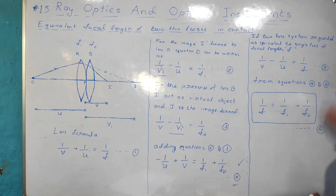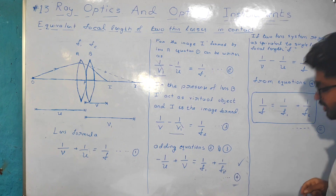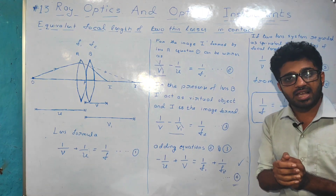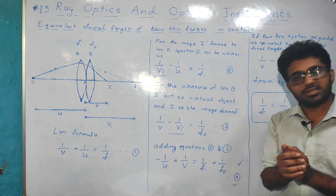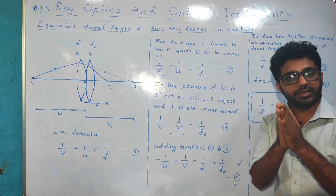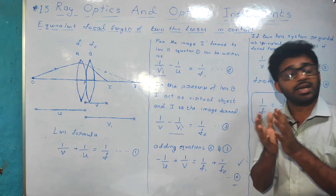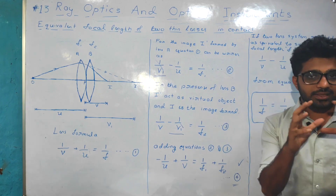If the two-lens system is regarded as equivalent to a single lens of focal length F, then for two thin lenses kept in contact, we can consider the combination as one equivalent lens with focal length F.